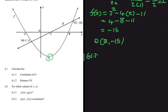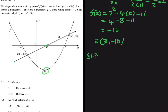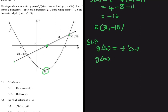Now let's do 6.1.2: calculate the distance CN. Here's C and N is right here. We don't have the coordinates of C yet. Since g(x) is a straight line, we need to find it. We're told in the question that g(x) equals the derivative of f(x), so we can differentiate f(x) to get g(x) = 2x - 4.